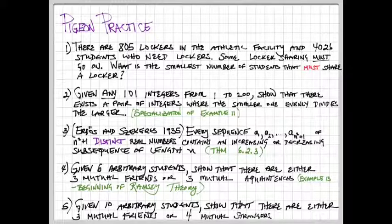Number 2, given any 101 integers between 1 and 200, show that there exists a pair of integers, no matter how you selected them, where the smaller number of the pair evenly divides the larger.